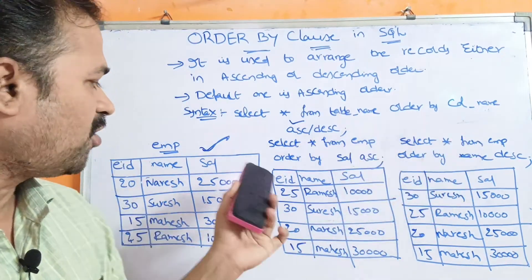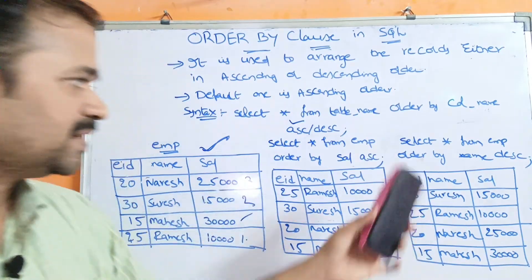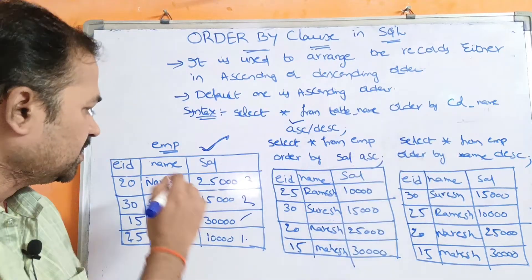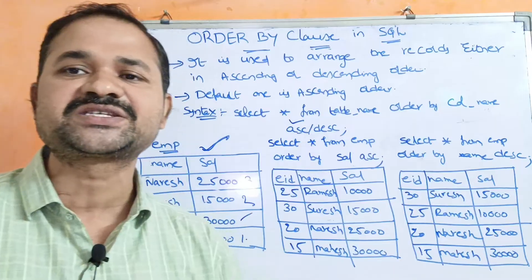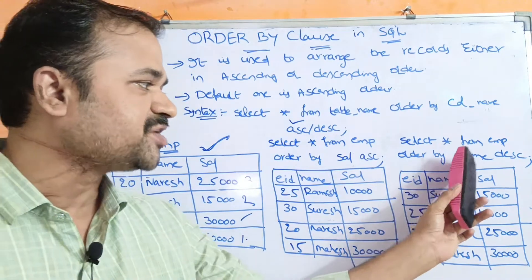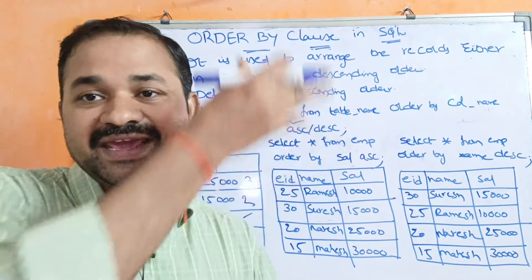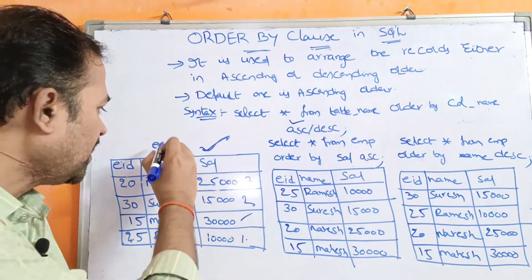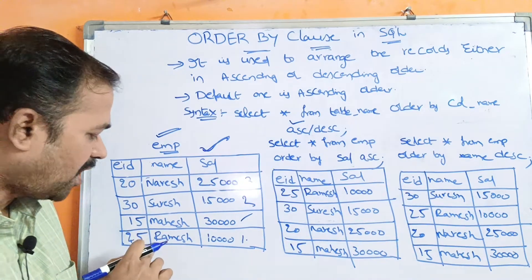Now let us perform the sorting based on the name column. So: SELECT * FROM EMP ORDER BY name DESC. DESC means the records will be arranged in descending order based upon the name. Descending order means higher to lower. Based upon the name, the first characters are: N (Naresh), S (Suresh), M (Mahesh), R (Ramesh).